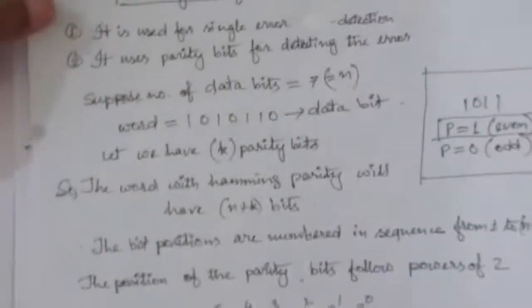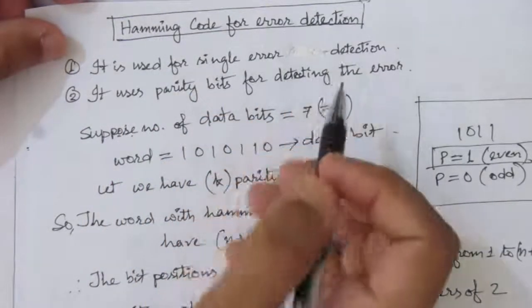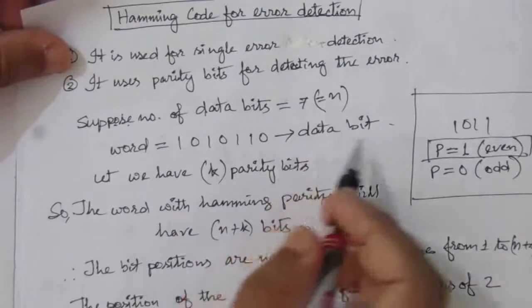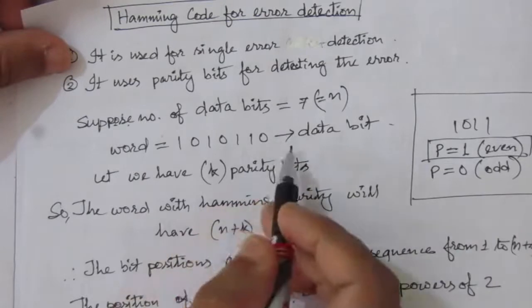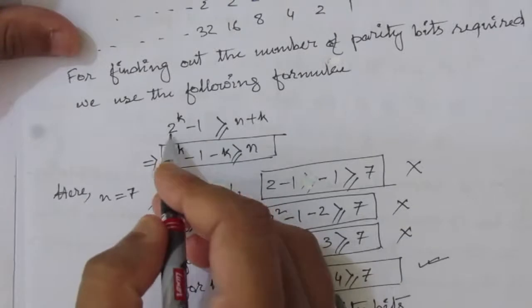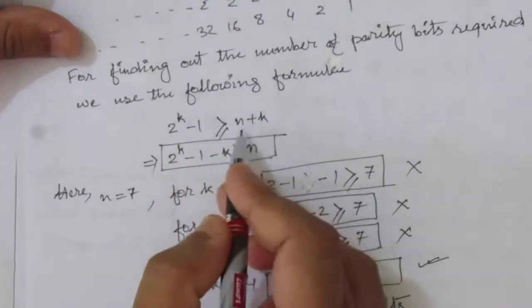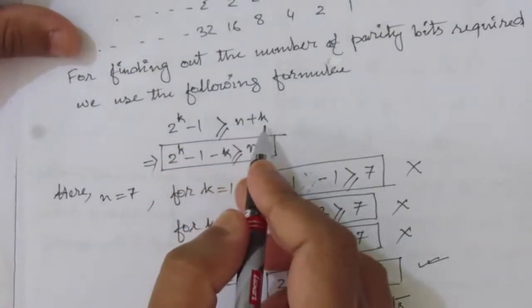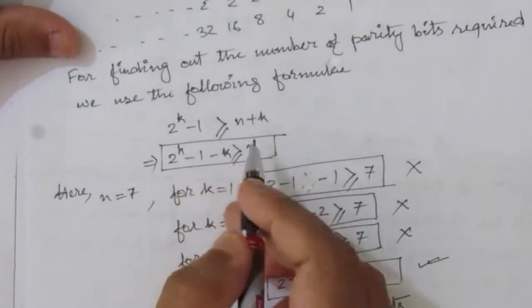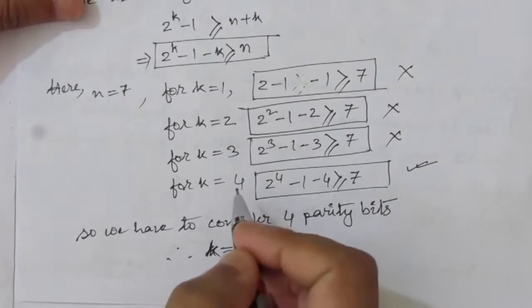In our previous video we have seen the Hamming code for error detection and correction. It has a data bit and k number of parity bits that follow the relation 2 to the power k minus 1 greater than or equal to n plus k, where n is the number of data bits and k is the number of parity bits. Using this formula we will determine the value of k.